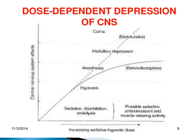The dose-dependent depression of CNS is illustrated by a graph in which barbiturates and alcohol have a steeper response — as dose increases, there is more and more CNS depression. Benzodiazepines and newer sedative hypnotic drugs attain a plateau at an earlier level, making them safer drugs compared to older drugs like barbiturates and alcohol.